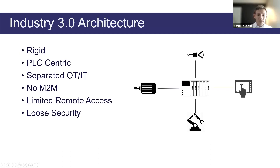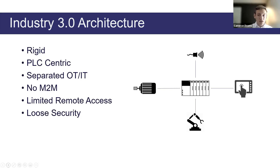If you want to get data from front-end systems into your production floor, Industry 3.0 Architecture makes that very difficult. Security and remote access also become very difficult with this architecture — you either need some sort of hub or device to connect to, or you have the opposite problem of very loose security where devices are connected directly to the Internet.